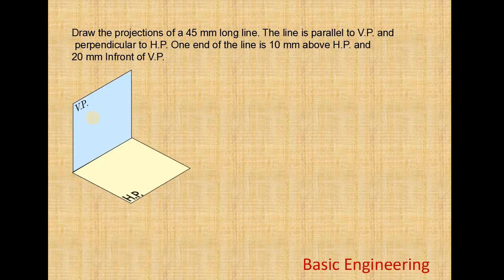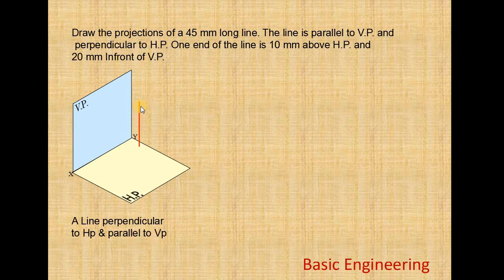First we see the line here in the orientation plane. This is the vertical plane and this is the intersection of the two planes, indicated by line XY. Here the line is perpendicular to HP and parallel to VP. We assume a line AB of 45mm length. This line is parallel to VP and perpendicular to HP.